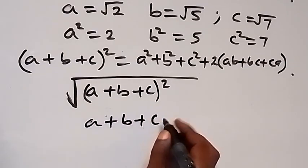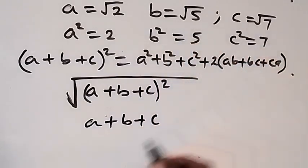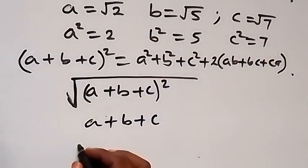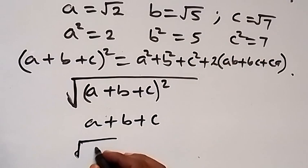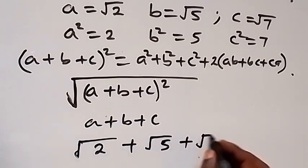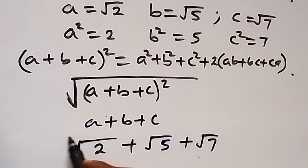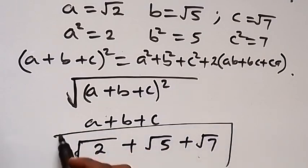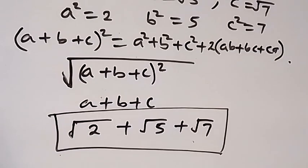Therefore we can conclude that the answer is root 2 plus root 5 plus root 7 as the simplified form of this problem. Thank you for watching, please share these videos and give a thumbs up, don't forget to subscribe as well. See you in the next class, bye for now.